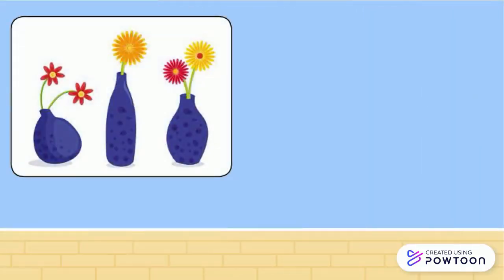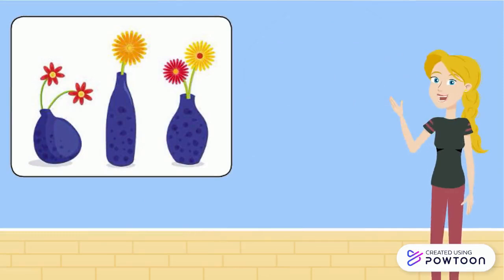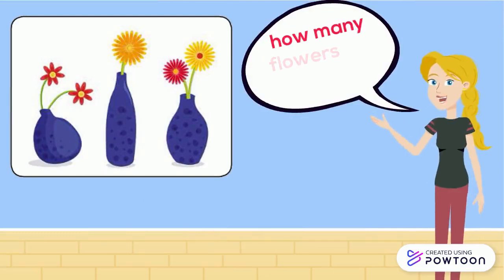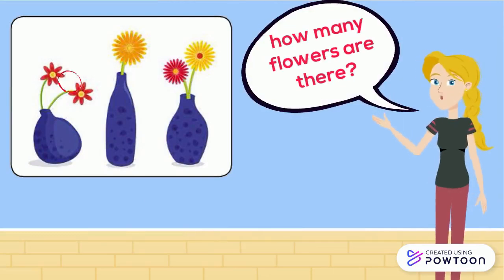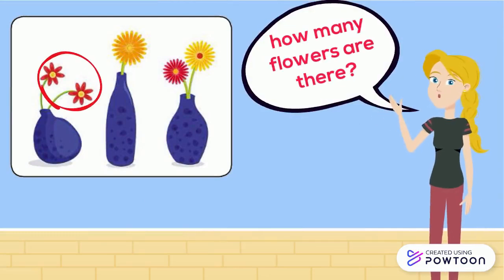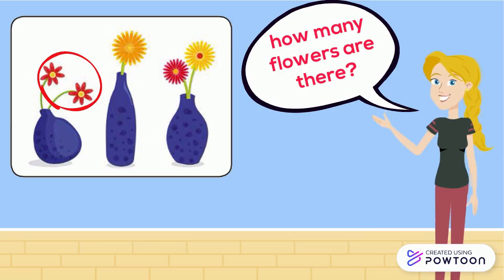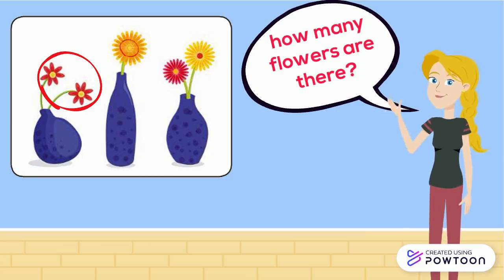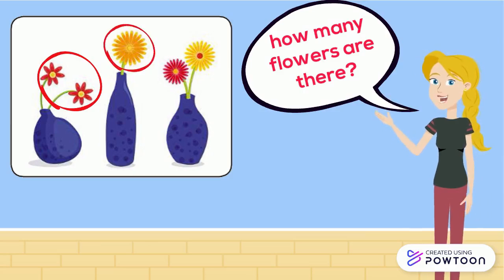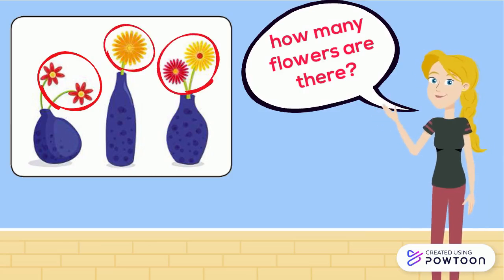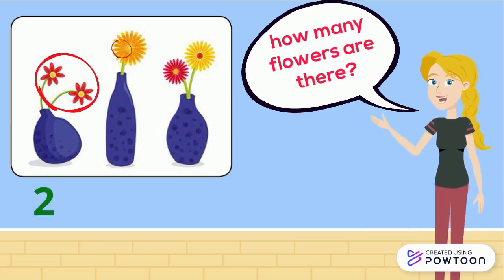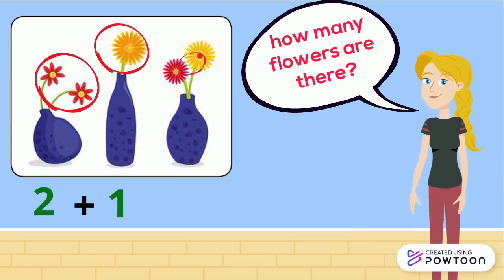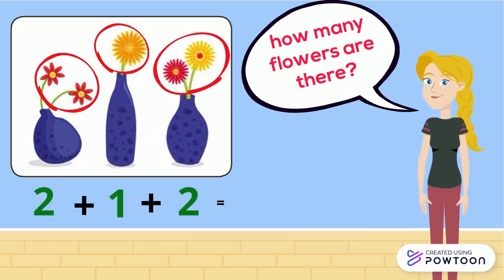How many flowers are there? In the first group, there are 2 flowers. In the second one, there is 1 flower. In the third one, there are 2 flowers. So the addition sentence is 2 plus 1 plus 2.